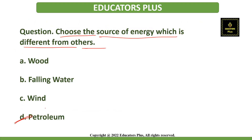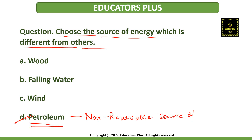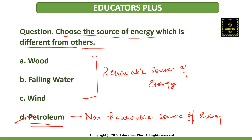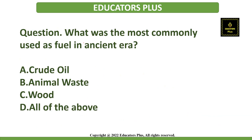MCQ: Choose the source of energy which is different from the others. The correct answer is option D — petroleum — because petroleum is a non-renewable source of energy, whereas wood, water, and wind can be renewable sources of energy.